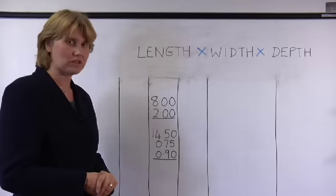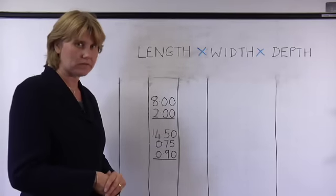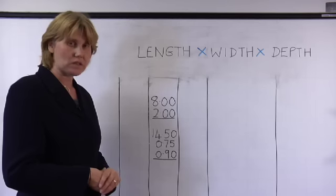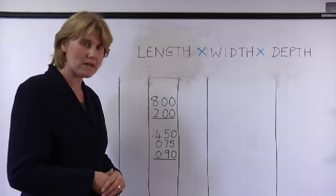When we record dimensions in our dimension column, we follow a specific order. Following this order means that other quantity surveyors can very easily see and follow what we've measured.